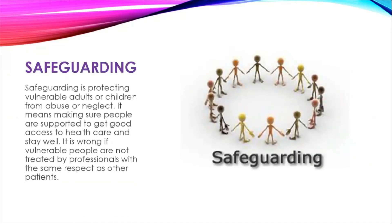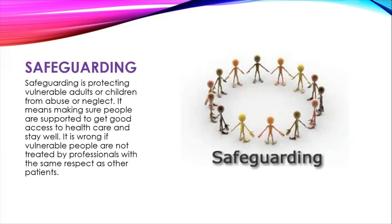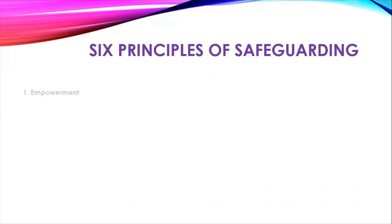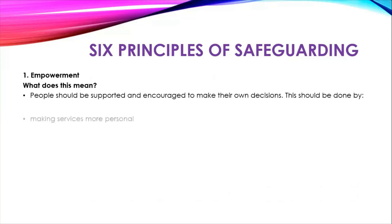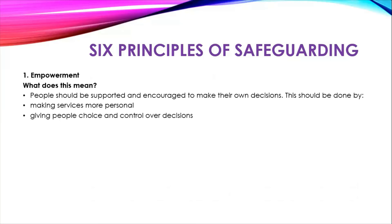What is safeguarding? Safeguarding is protecting vulnerable adults or children from abuse or neglect. It means making sure people are supported to get good access to healthcare and stay well. It is wrong if vulnerable people are not treated by professionals with the same respect as other patients. The first of the six principles of safeguarding is empowerment — people should be supported and encouraged to make their own decisions by making services more personal, giving people more choice and control over their decisions, and asking people what they want the outcome to be.